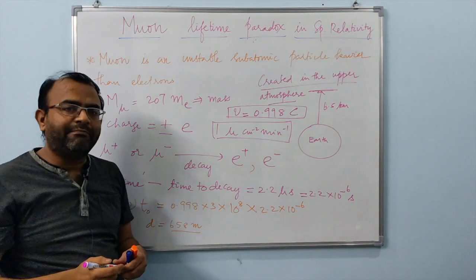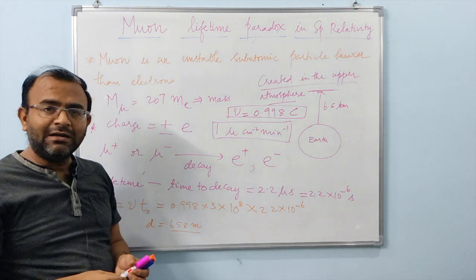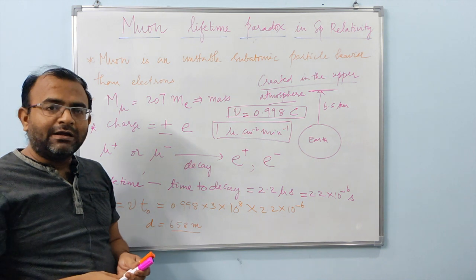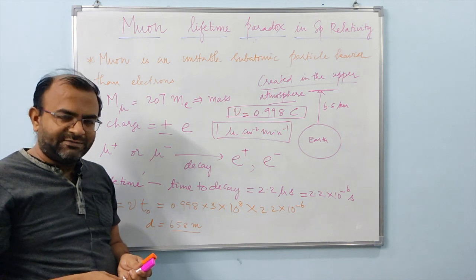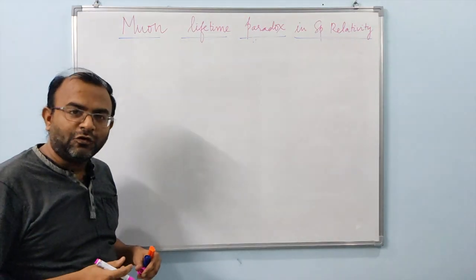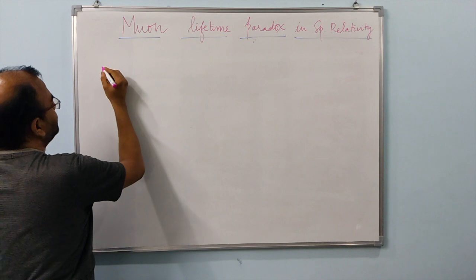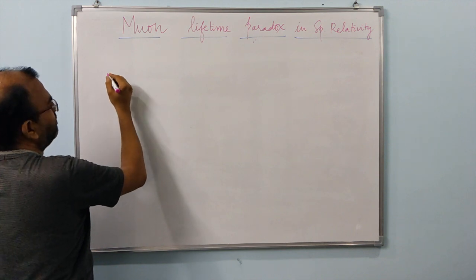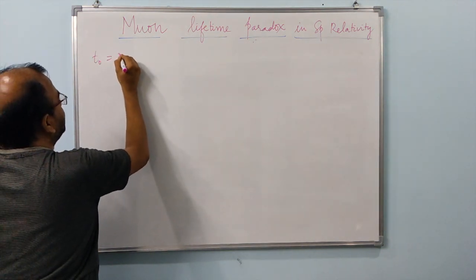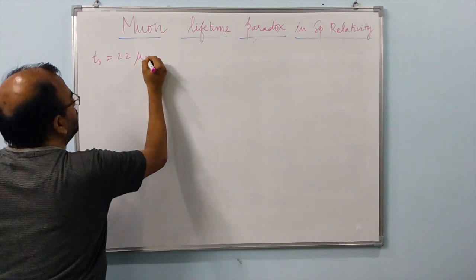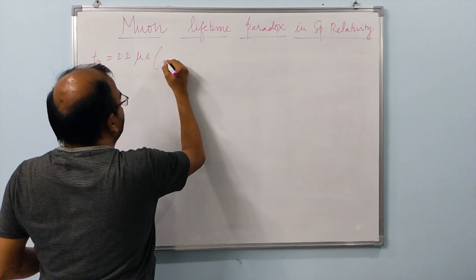This is the origin of the paradox — the muon lifetime paradox. This can be easily resolved using the special theory of relativity. The paradox is resolved by understanding that the lifetime of 2.2 microseconds is measured in the frame of reference of the muon itself.